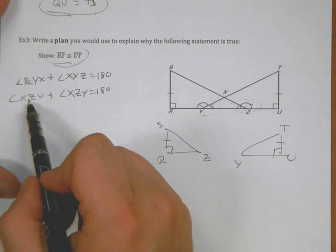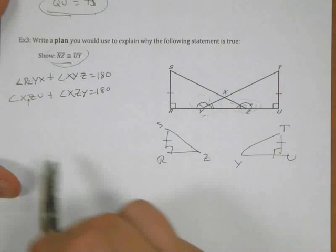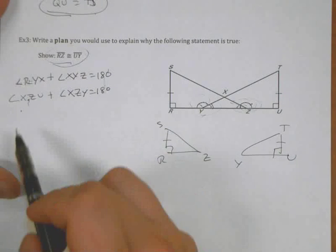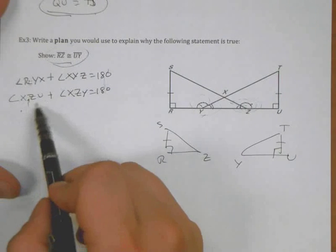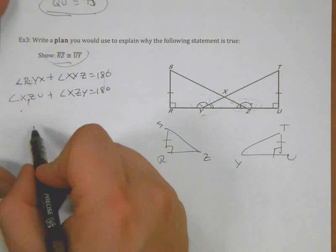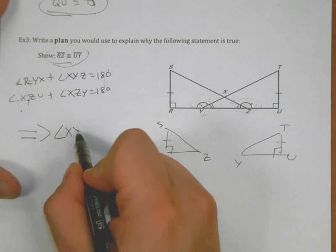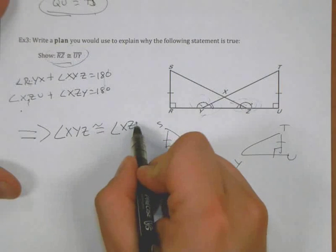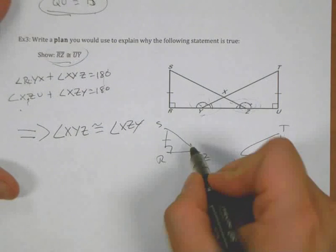And then since these two are marked the same on the diagram, then you could substitute, use transitive property to set these equal to each other, substitute one for the other, cancel them out, and eventually show that angle XYZ is congruent to angle XZY.